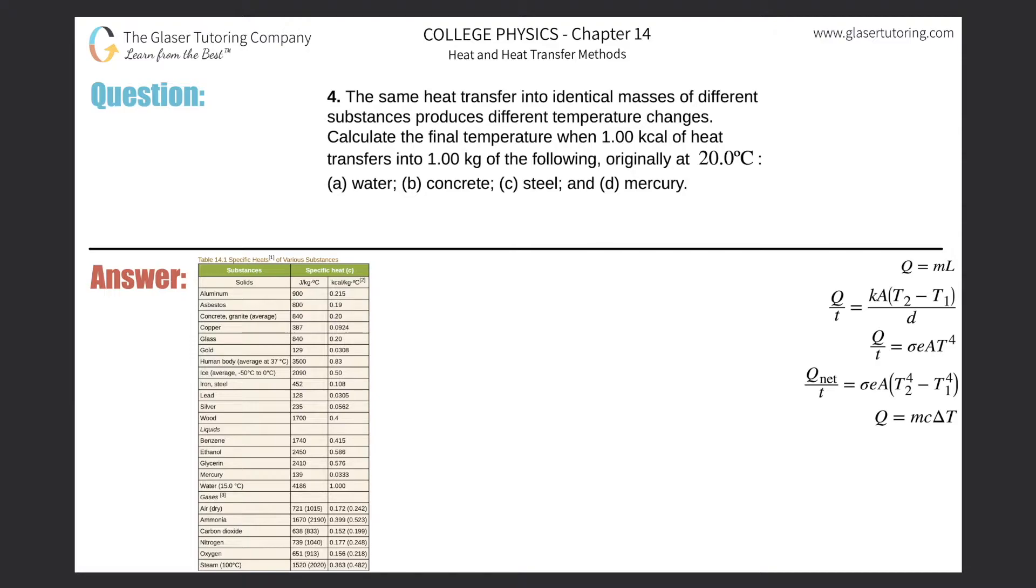Number four, the same heat transfer into identical masses of different substances produces different temperature changes. Calculate the final temperature when one kilocalorie of heat transfers into one kilogram of the following, originally at 20 degrees Celsius.